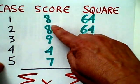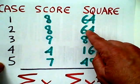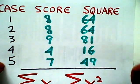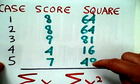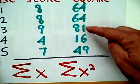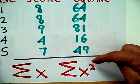Now, we're going to take each score and we're going to square it. 8 becomes 64, 9 becomes 81, 4 becomes 16, 7 becomes 49, and we're going to add up the sum of all of those squares of the scores.